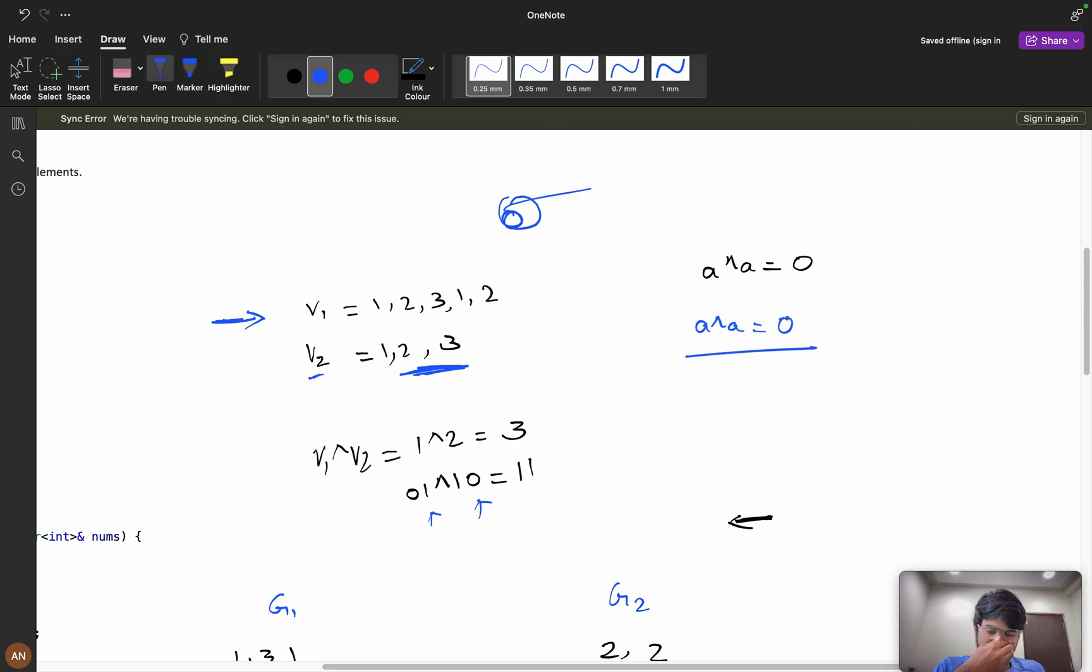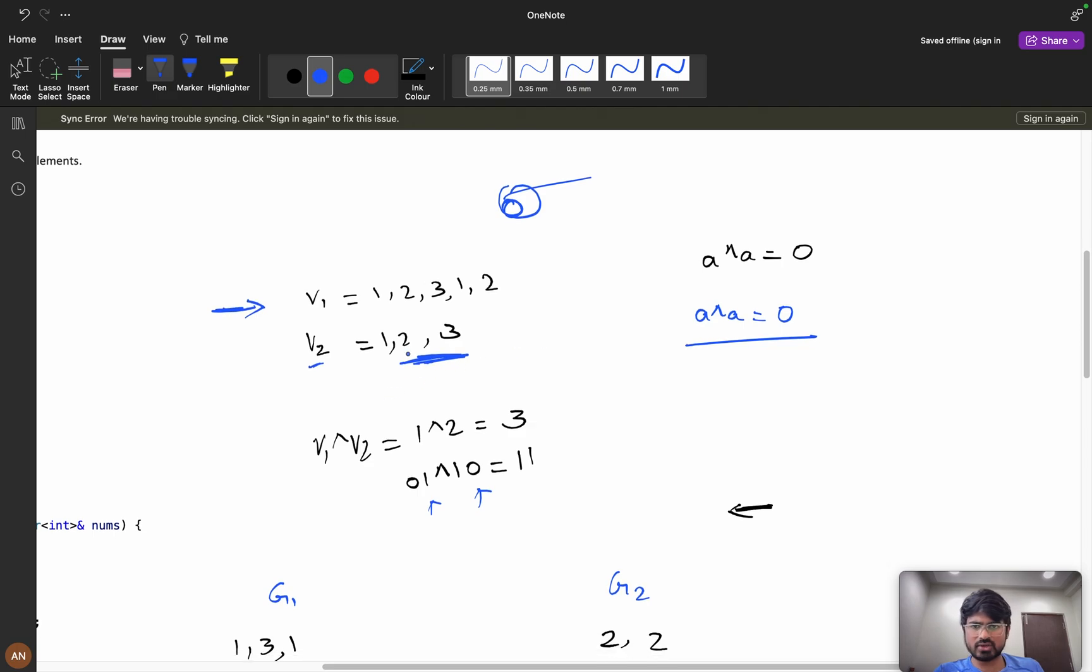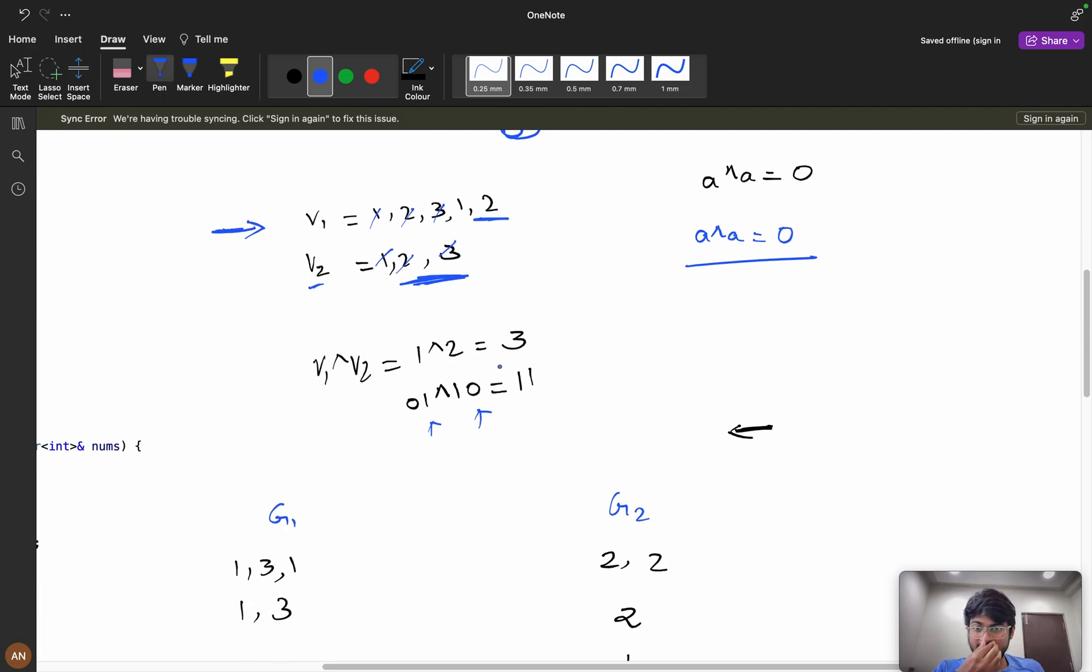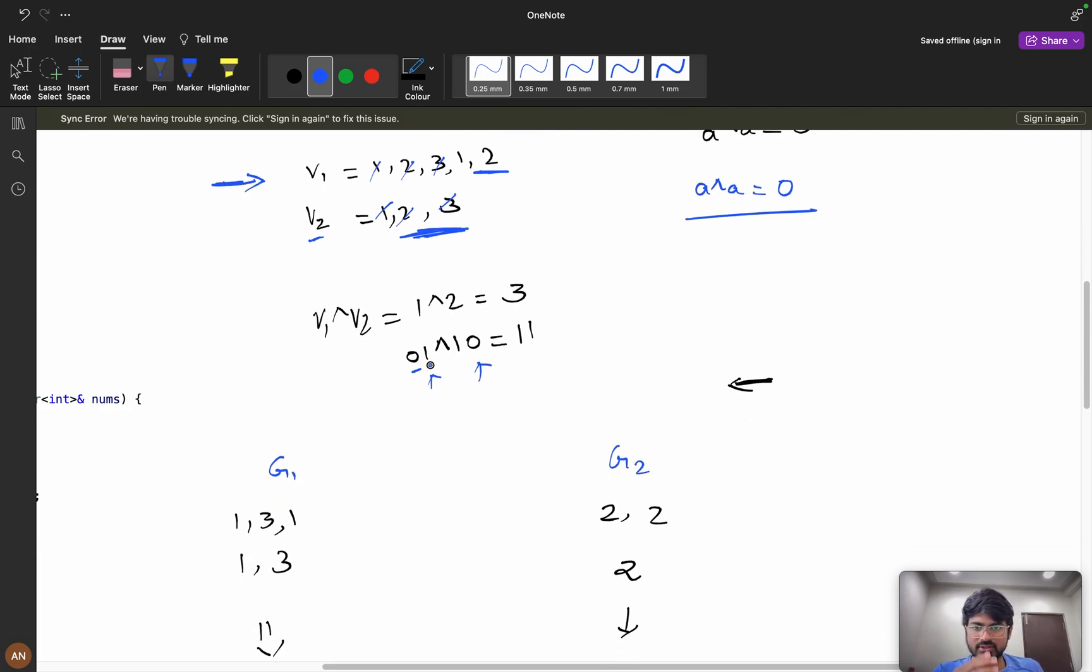Now you know XOR properties, right? A XOR A, if both numbers are same, my XOR will be zero. Now if you observe v1 XOR v2, all my elements: 1, 1 will get cancelled, 2, 2 will get cancelled, 3, 3 will get cancelled. Only 1 XOR 2 is left, so my 1 XOR 2 is 3. Now if you observe, this is 1 in binary: 0, 1, this is 2: 1, 0, and this is 3: 1, 1.